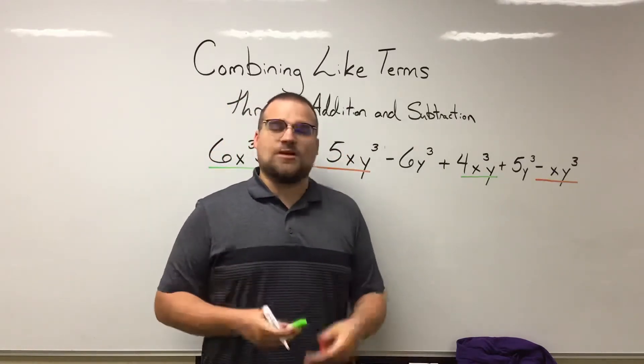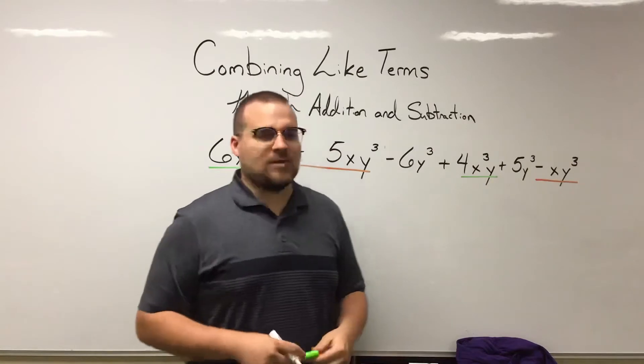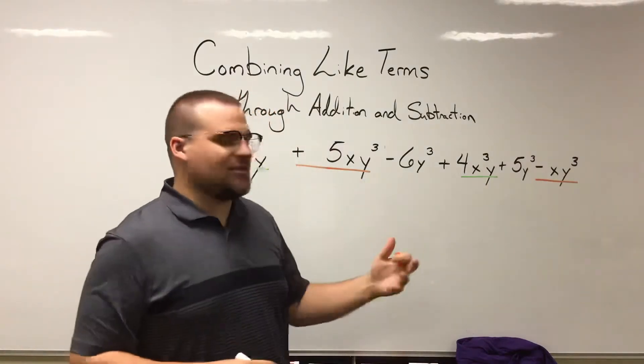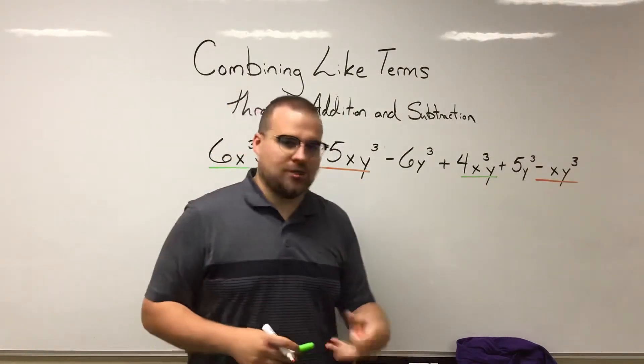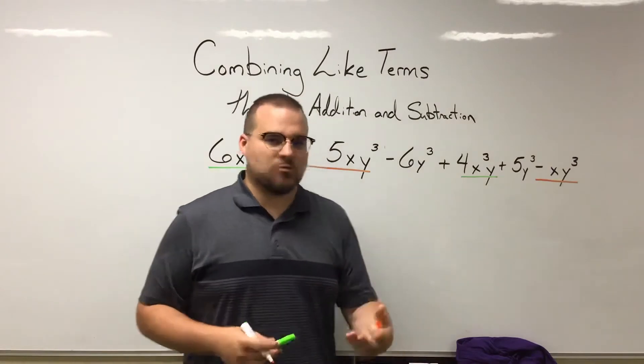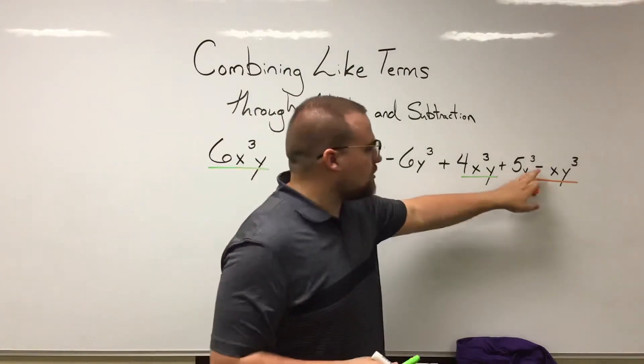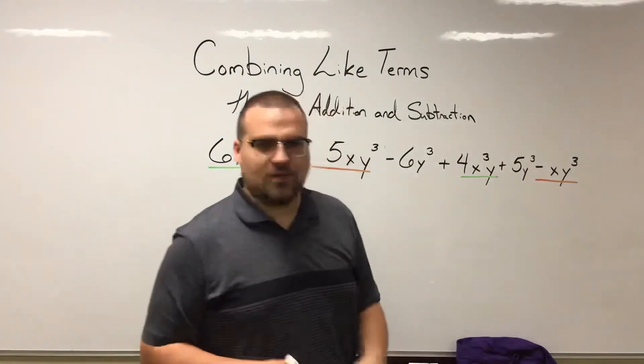It's that idea of the invisible one. Whenever we have a variable that does not have a written coefficient, we can assume its coefficient is 1—or in this case, since there's a minus sign in front of it, a negative 1.